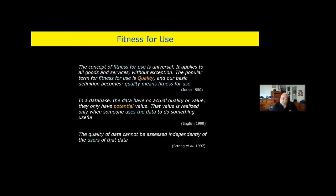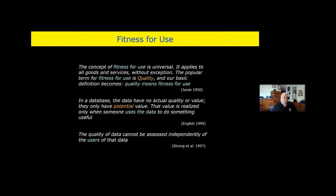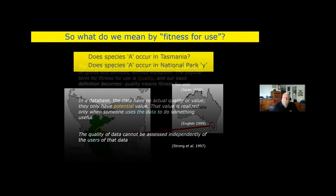Duran, back in 1950, was a Romanian-American regarded as the father of data quality. He said the concept of fitness for use is universal — it applies to all goods and services without exception. The popular term for fitness for use is quality, and our basic definition becomes: quality means fitness for use. English said data have no actual quality or value in a database — they only have potential value, realized only when someone uses the data to do something useful. And Strong noted the quality of data cannot be assessed independently of the users of that data.